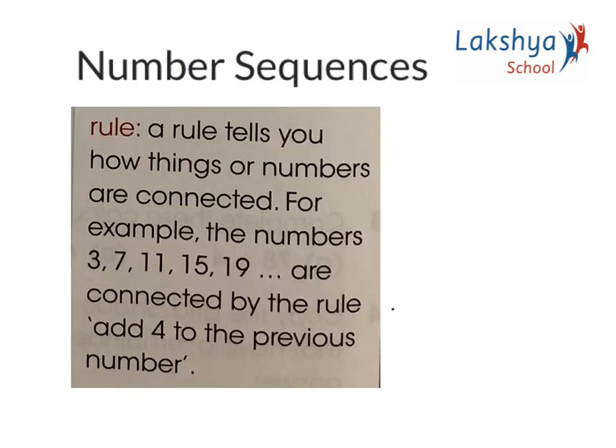Rule. We all follow certain rules. Numbers do follow certain rules and they are connected to each other. The rule tells us how things or numbers are connected. For example, the numbers 3, 7, 11, 15, 19 are connected by the rule: add 4 to the previous number.